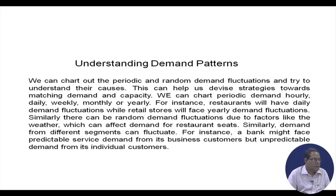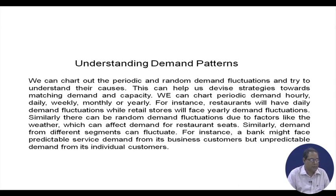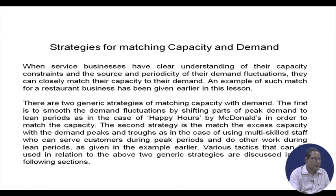We can chart out the periodic and random demand fluctuations and try to understand their causes. This can help devise strategies towards matching demand and capacity. We can chart periodic demand hourly, daily, weekly, monthly, or yearly. For instance, restaurants will have daily demand fluctuations while retail stores will face yearly demand fluctuations. There can also be random demand fluctuations due to factors like weather, which can affect demand for restaurant seats. Demand from different segments can also fluctuate — a bank might face predictable demand from its business customers but unpredictable demand from its individual customers.